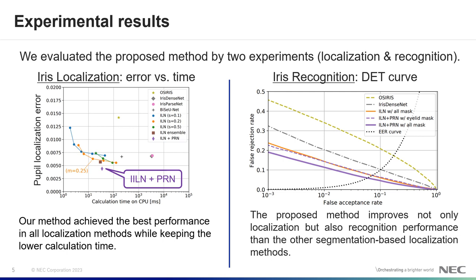The right figure shows the evaluation results of iris recognition. We used OSIRIS as the recognition engine. And we replaced OSIRIS segmentation and localization methods with Iris DenseNet and the proposed method. This figure shows the detection error tradeoff curves, and left bottom means better performance. The results show that the proposed method improves not only localization, but also recognition performance compared to other segmentation based localization methods.